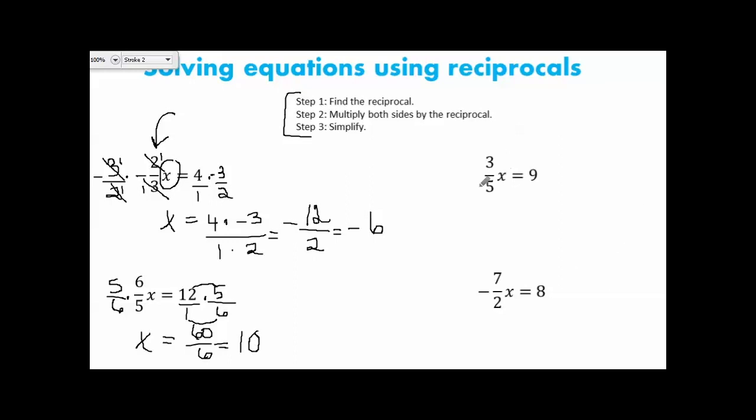Over here, multiplying both sides by the reciprocal. I have 3 fifths times x, so the opposite of multiplying by 3 fifths is multiplying both sides by the reciprocal, 5 over 3. I'll make my whole number a fraction. These cancel each other out or simplify to 1. We have 1x or just x equals 9 times 5, which is 45, and 1 times 3, which is 3. 45 divided by 3 is 15.